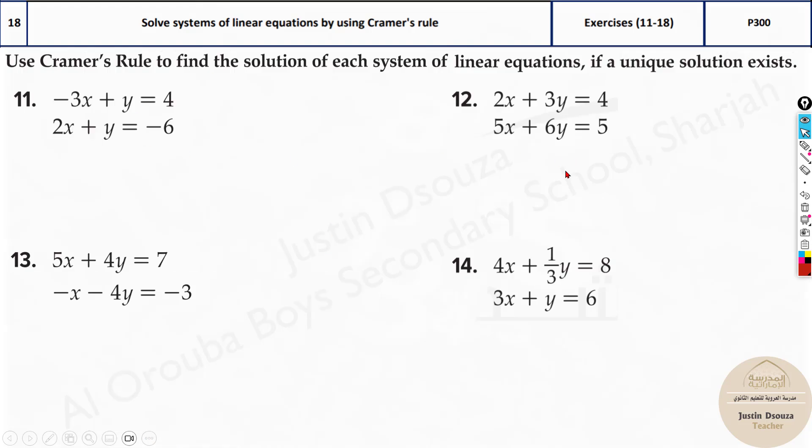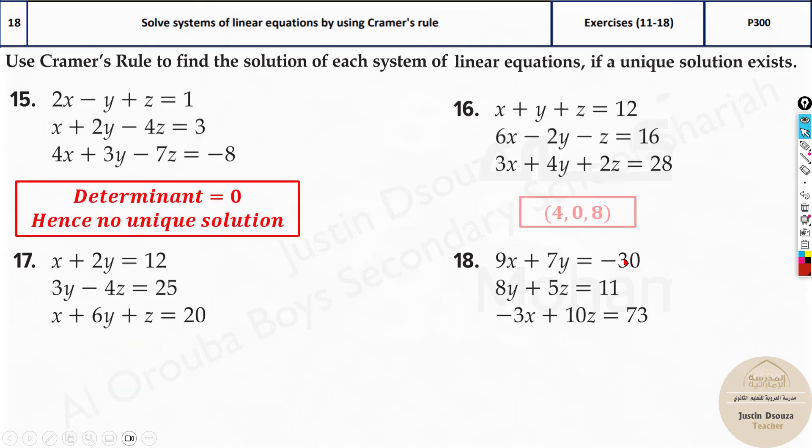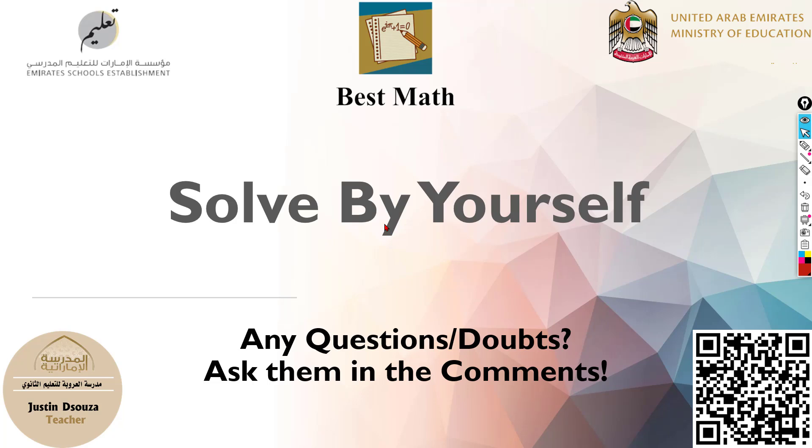So please do try these problems by yourselves. 2 cross 2 is very simple. When it comes to 3 cross 3, it takes plenty of time to do it. Please do it by yourselves and then check the answers over here. All answers are solved here. And you can see over here, the determinant would be 0. What if you do it in the calculator? You can try it. You will get math error or no solution. Therefore, we can tell it does not exist. It's not having a unique solution. Try all the problems. If you're stuck or if you're having any doubts, please post them in the comments.